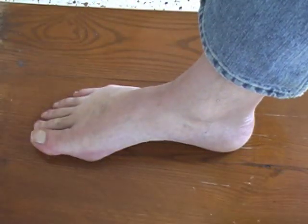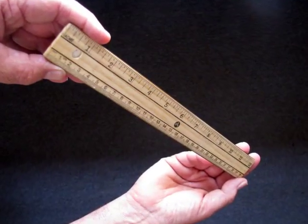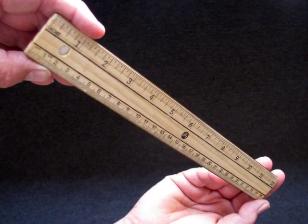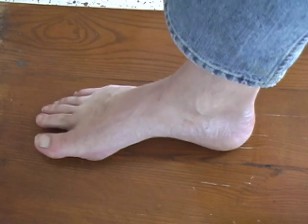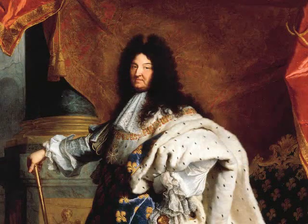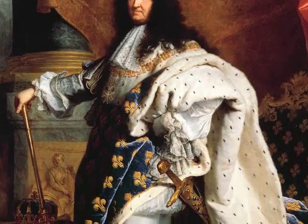The foot is another ancient unit of length. It was probably based on the length of a human foot. The problem, of course, is whose foot? Possibly the length of the king's foot. But kings come and go, along with their feet.